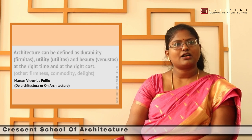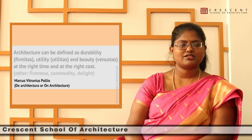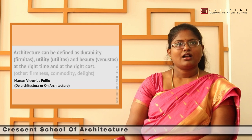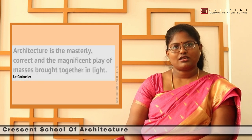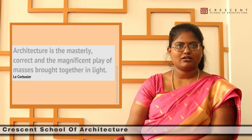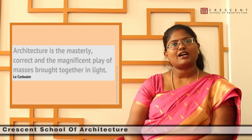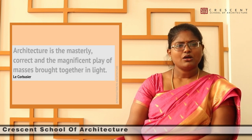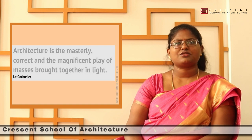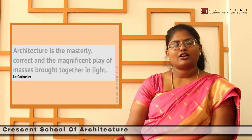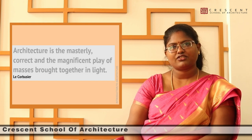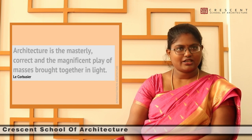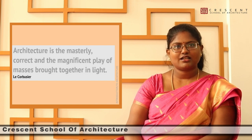This definition was put down by Marcus Vitruvius Pollio. As stated by the father of modern architecture, architecture is the masterly, correct, and magnificent play of masses brought together in light. Both definitions are very different, but at the same time both are very correct. According to the student's perspective, they have to define and understand architecture. But the most preliminary definition of architecture is that it is supposed to be the art and design of spaces.